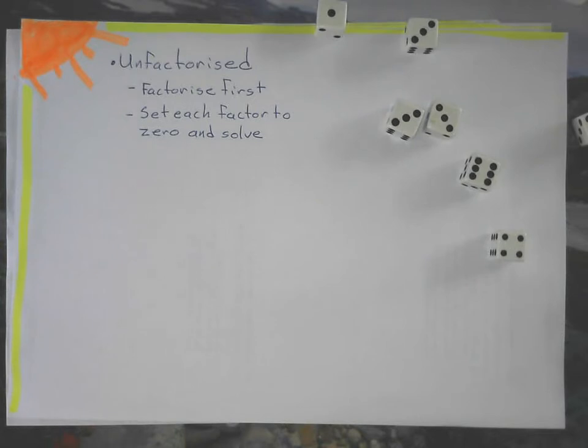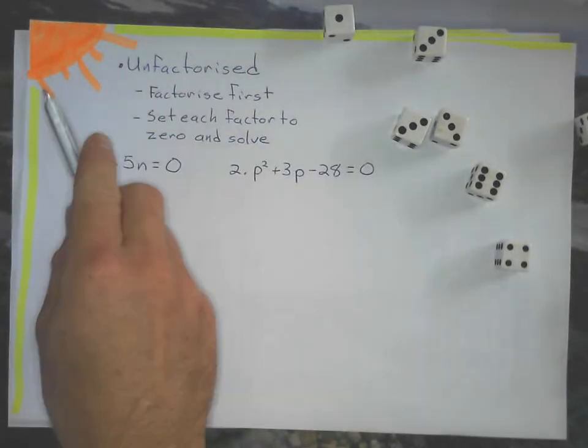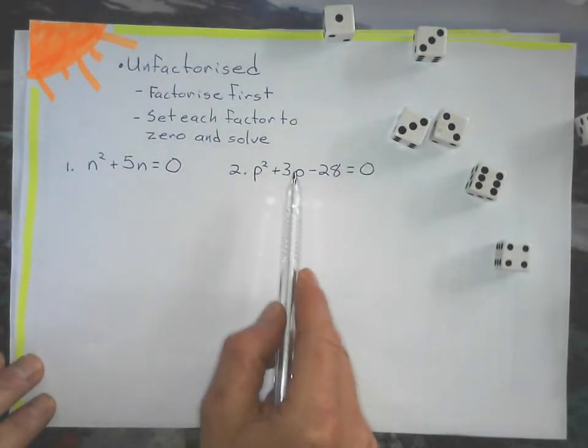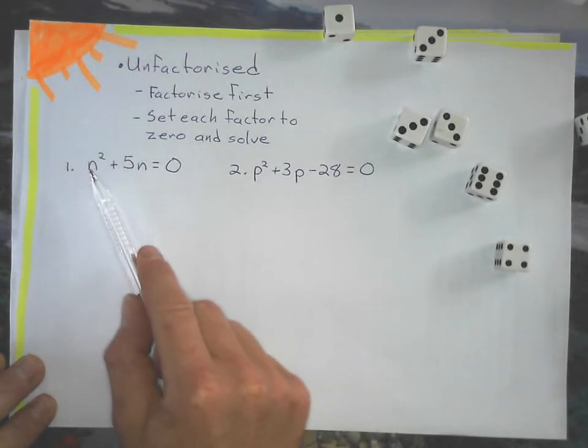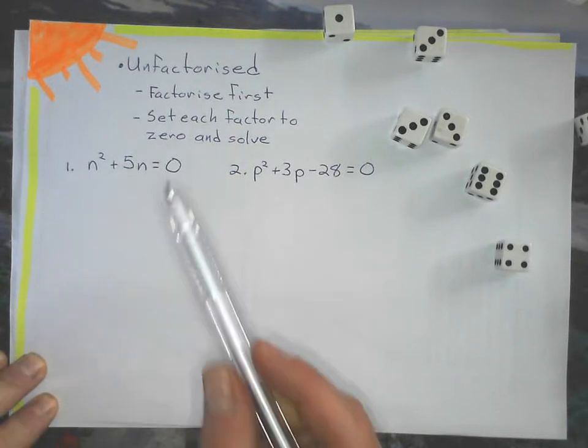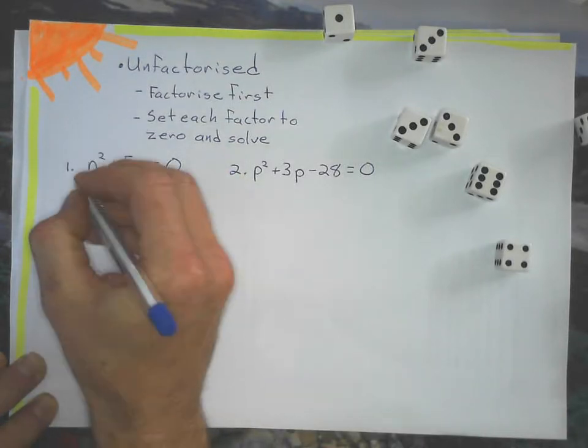We'll do a couple of examples. Let's look at the first one. This first quadratic has a common factor, a common factor of n hiding in each term. So I factorize that out.